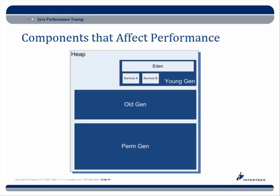To visualize this: the young generation area is broken into three parts — eden, survivor A, and survivor B. All objects that are first created go into eden, and after a couple of garbage collections they might be moved into survivor A or survivor B.